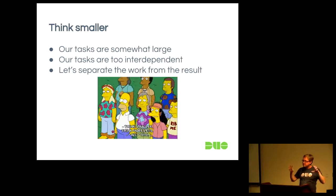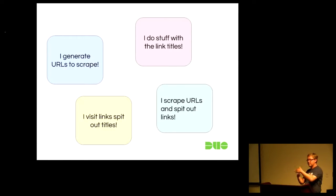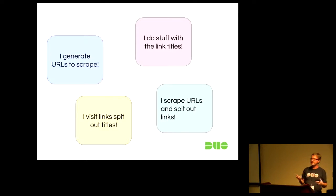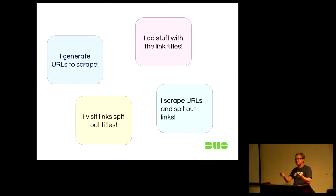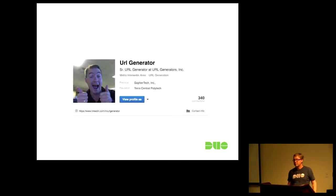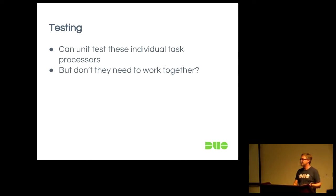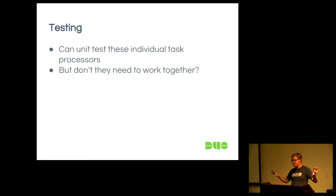We can have individual functions: one that scrapes URLs, one that does things with link titles, one that visits a page and gets links, one that gets titles. Once we have these individual functions, we can ask: how do I know you're doing the job you're supposed to? The answer, of course, is testing. We can test these individual pieces independently. But they still need to work together, so what mechanism can we use to test them nicely but still have them cooperate?